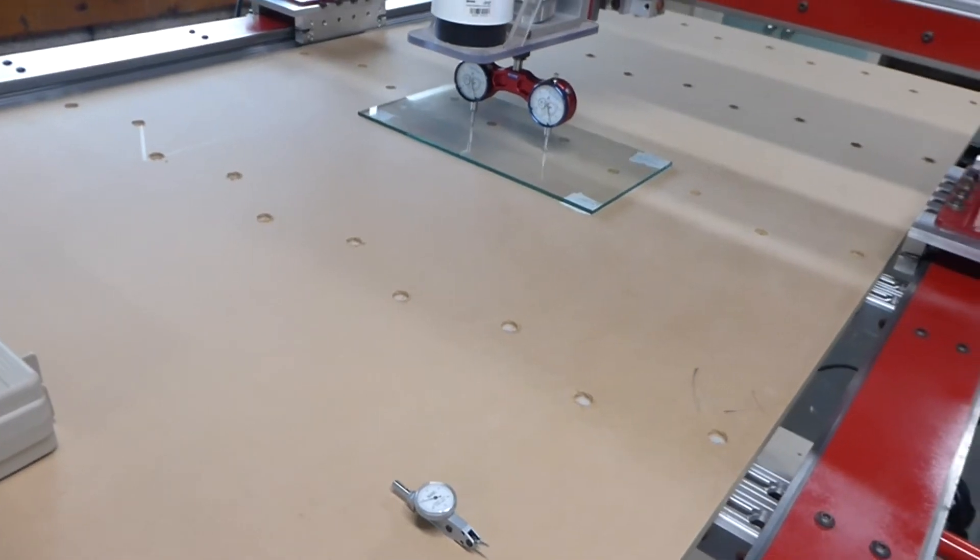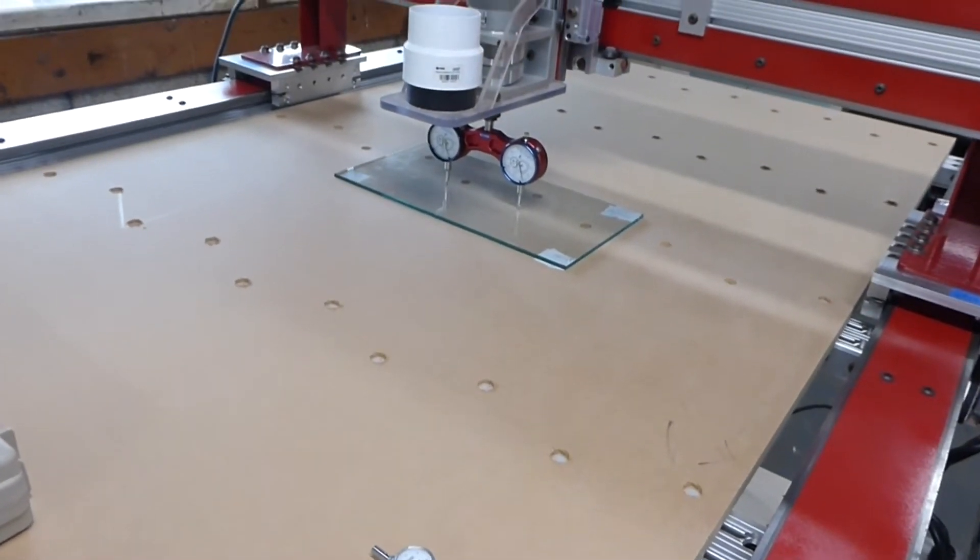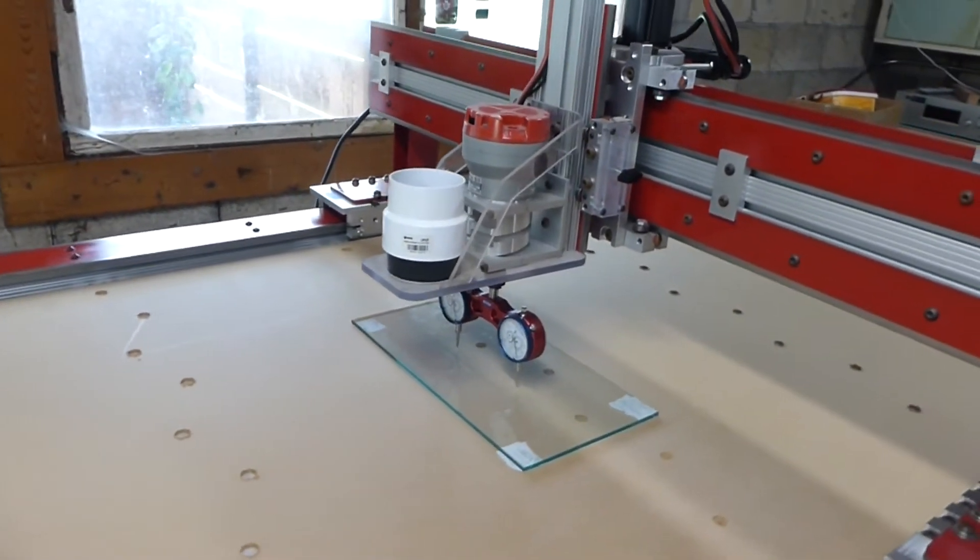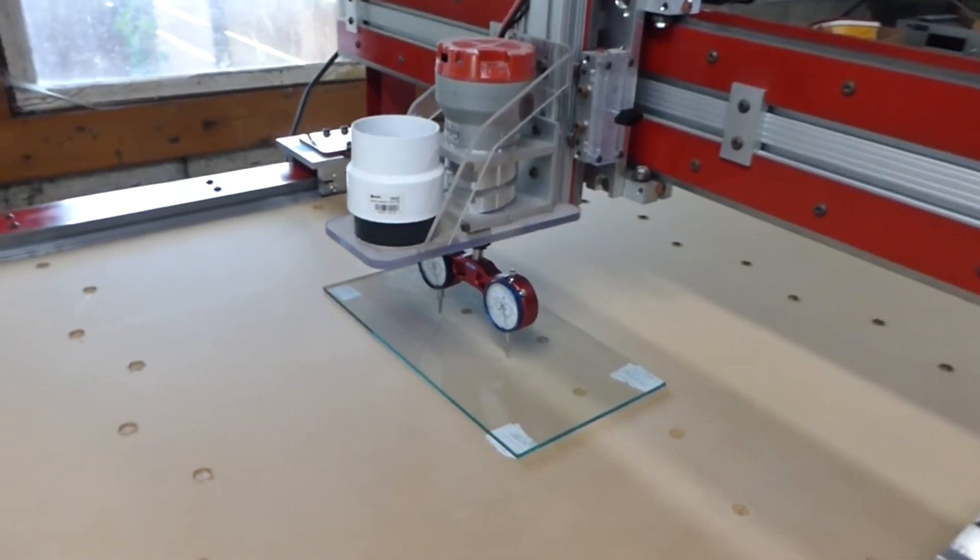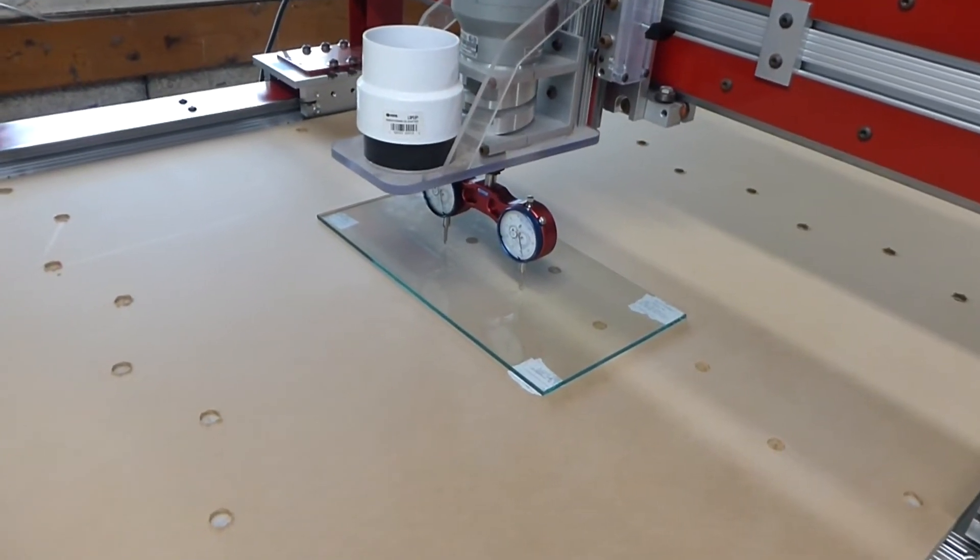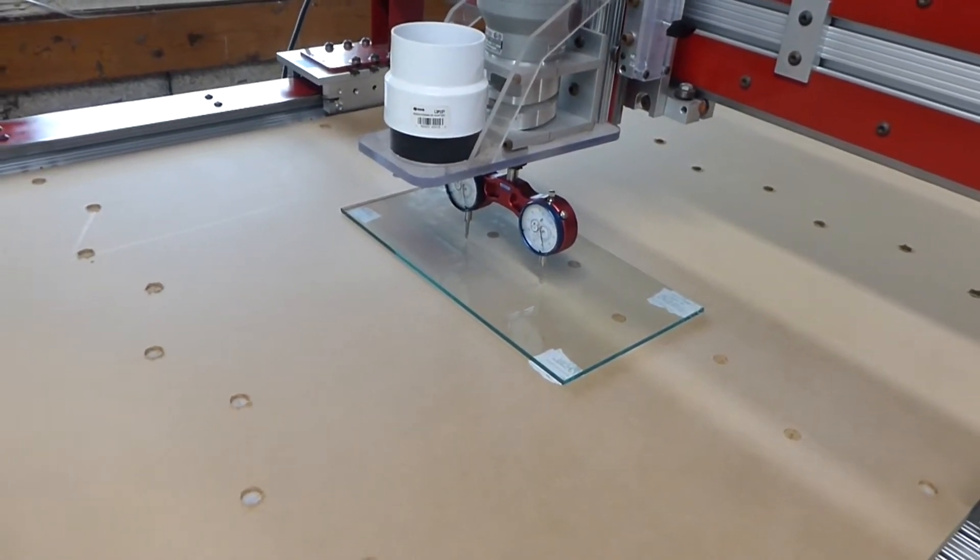The next part would be to surface this tabletop, but before I can do that I need to tram my cutting head. In order to do that, I've decided to do a little technique that I saw in another YouTube video.